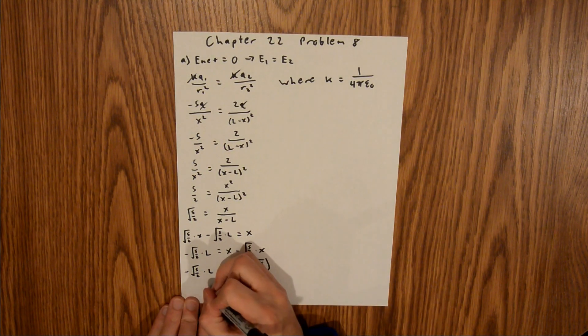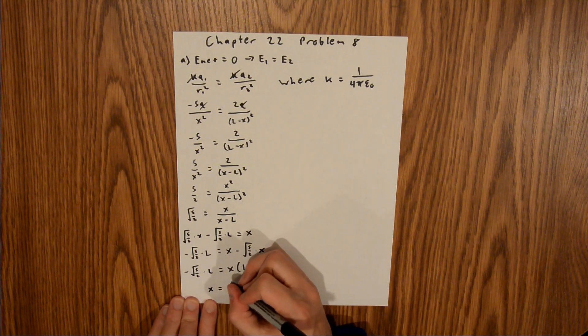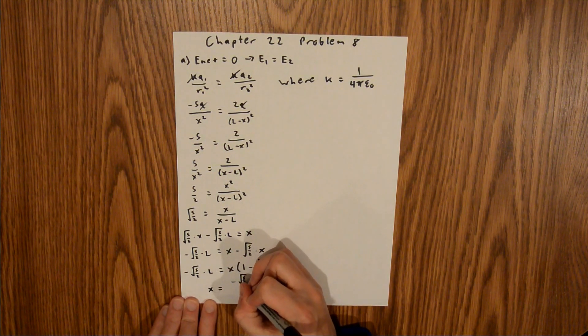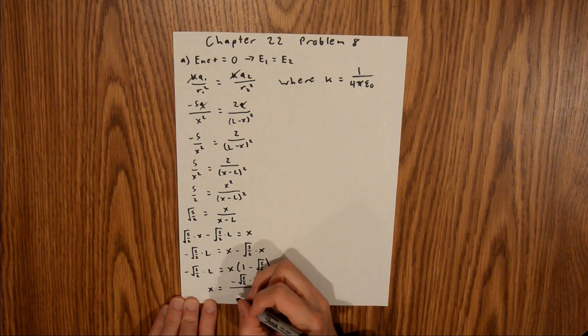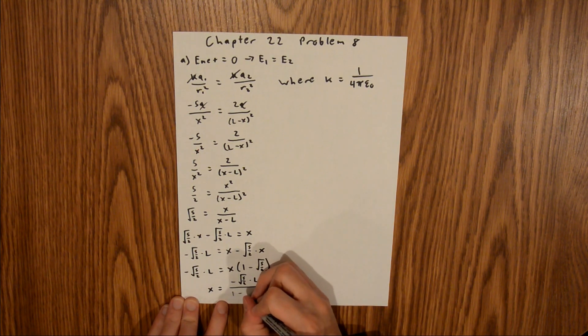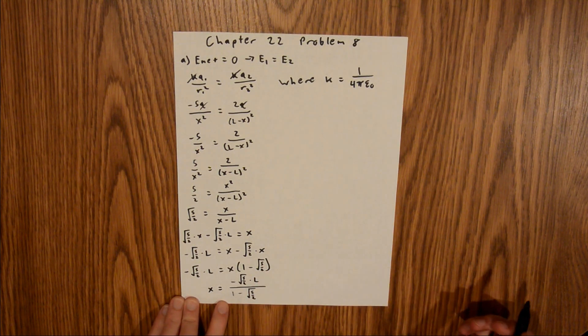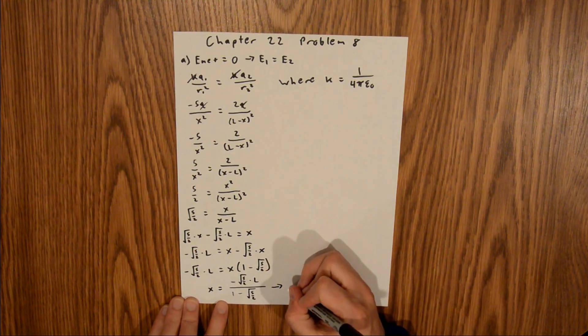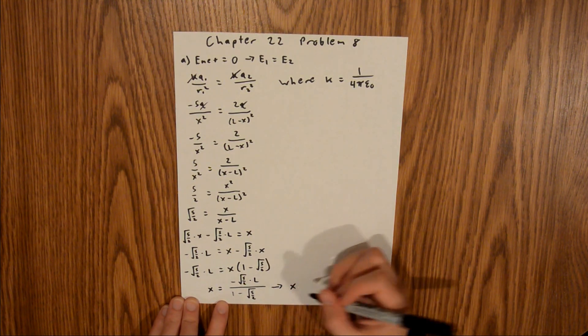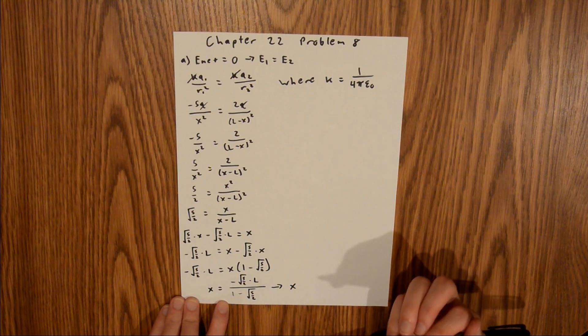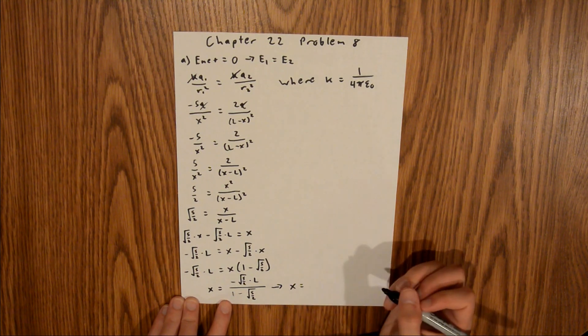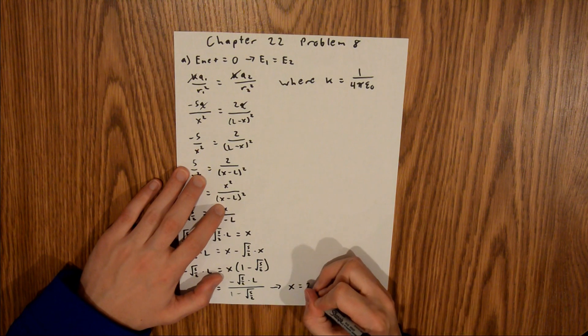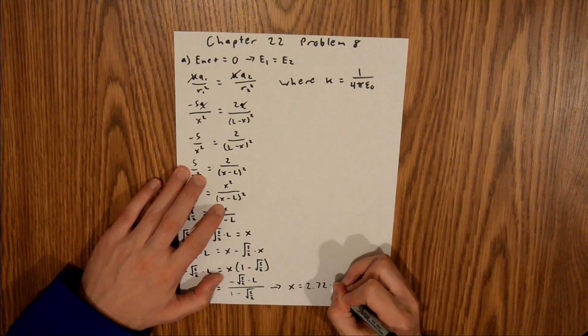And now we can divide our 1 minus the square root of 5 halves to the other side, and we'll get that x is equal to negative square root of 5 halves times l over 1 minus the square root of 5 halves. And if you plug all of that into your calculator, you'll find that your x value, which is the point where your electric field is 0, is equal to 2.72 times l.